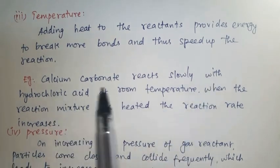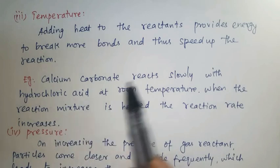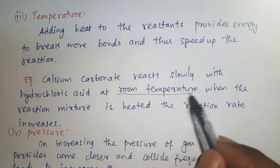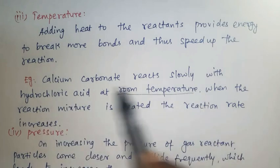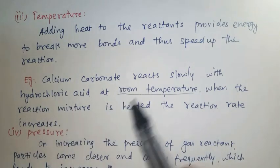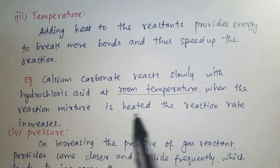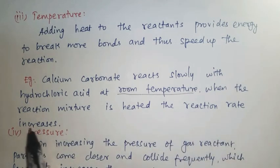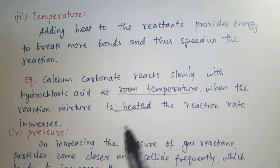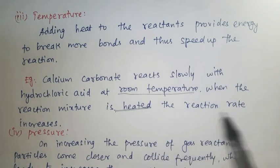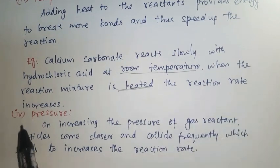For example, calcium carbonate reacts slowly with hydrochloric acid at room temperature. But when the reaction mixture is heated, the reaction rate increases. Increasing temperature increases the reaction rate. Fourth factor: pressure.